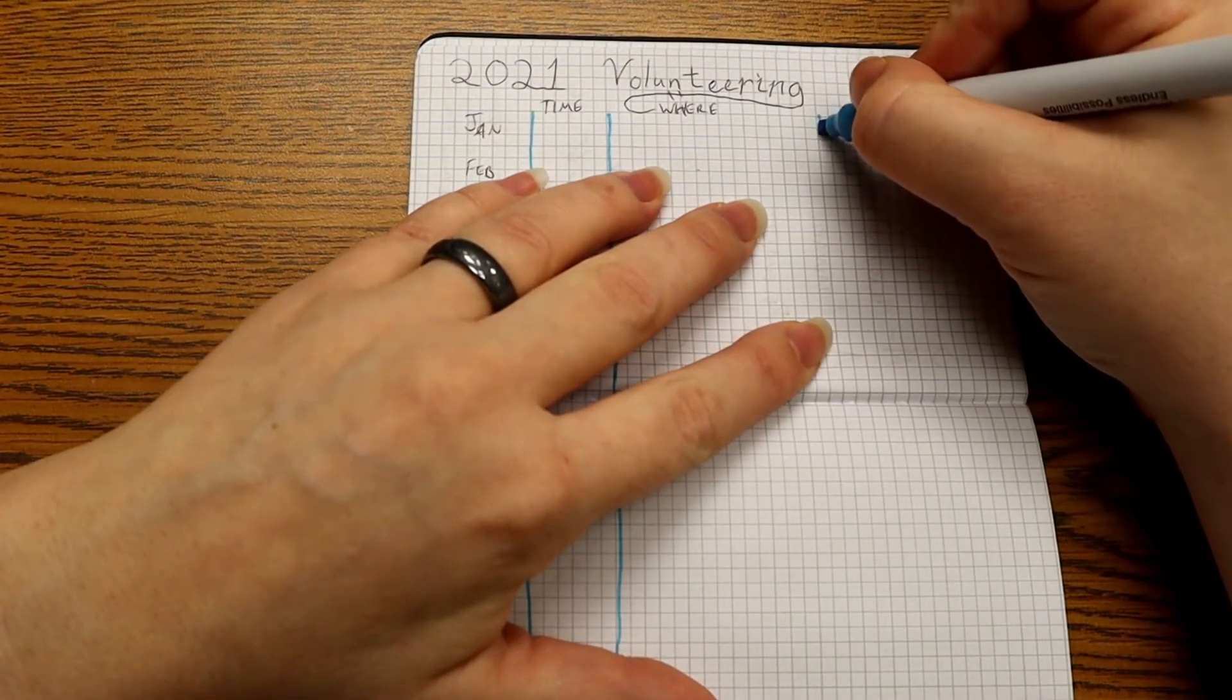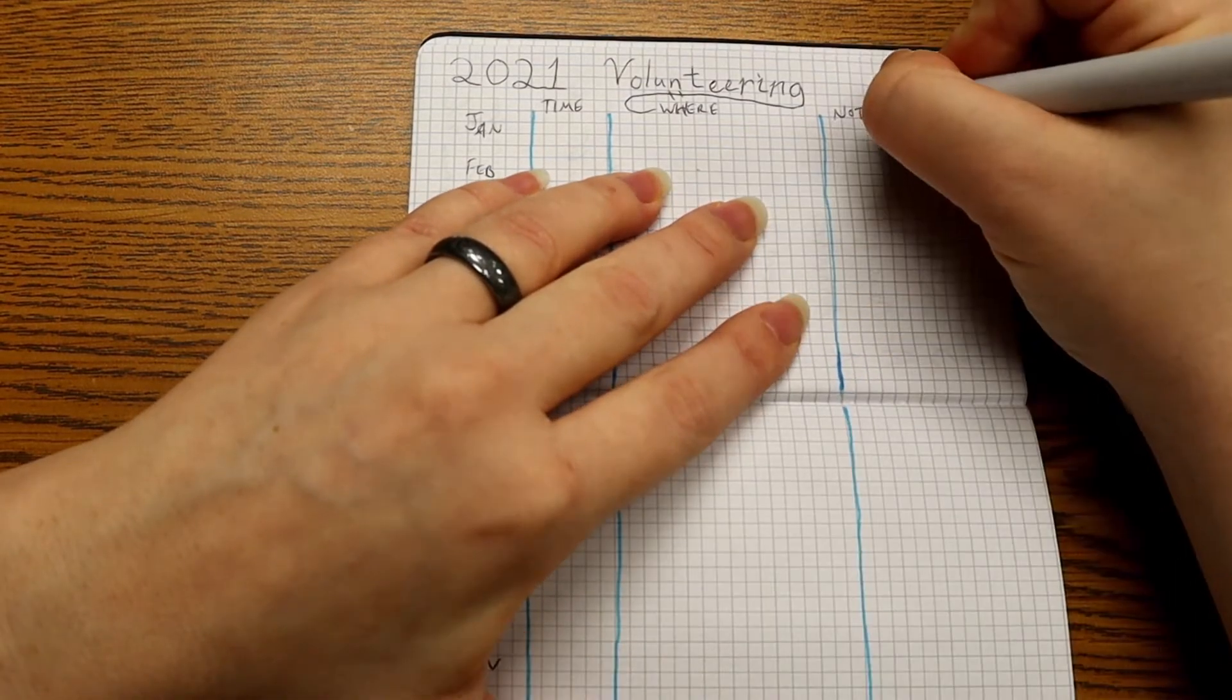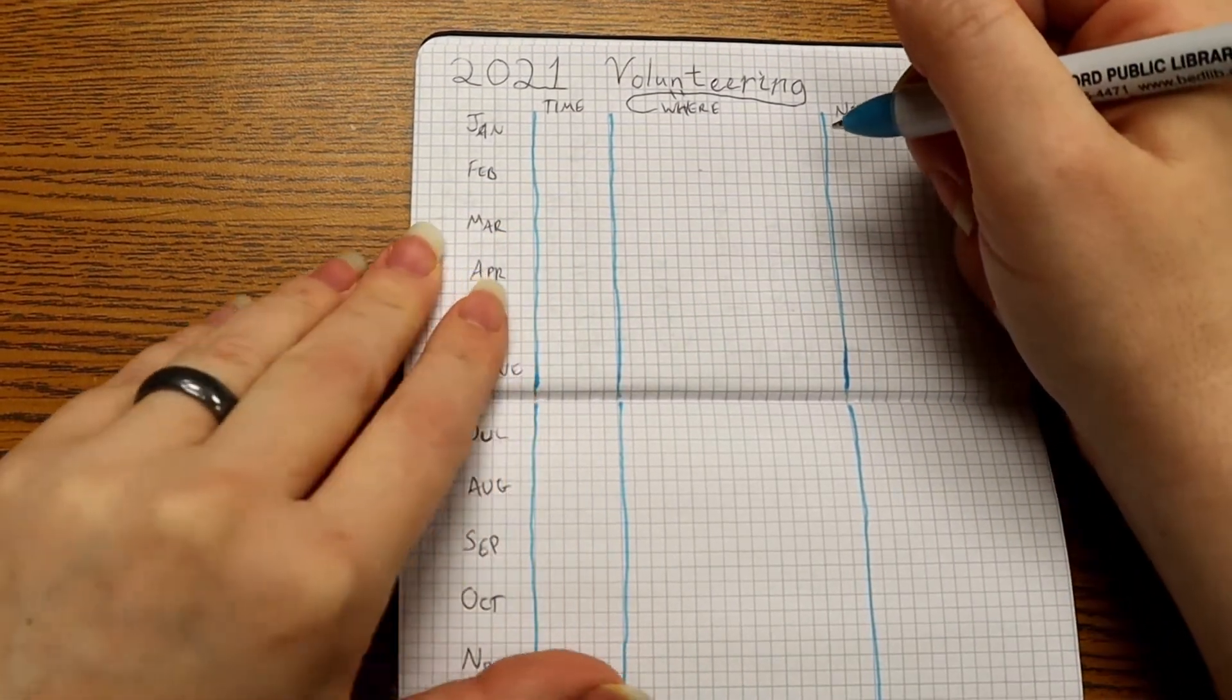I'm going to give myself six columns for this so I can track it in 10 minute increments to see how much time I've actually been volunteering. Then I'm actually going to put a place for where I'm volunteering. And then finally, I'm going to put a section for notes.